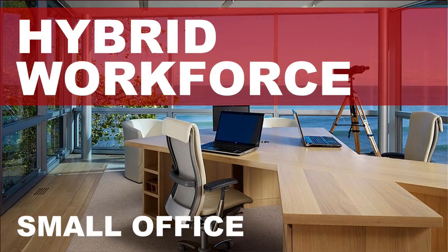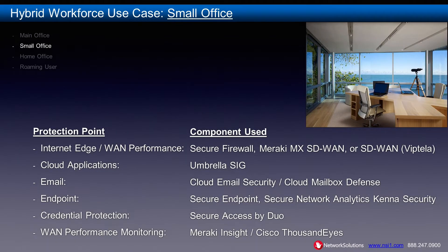Let's talk about the small office — a secondary office connected to one or two main offices. The small office use case is similar to the main office use case: it still has internet edge protection and WAN performance needs, which can often be handled by the same component. A secure firewall doesn't provide SD-WAN capability, although it does provide some simple failover, policy-based routing, and such.